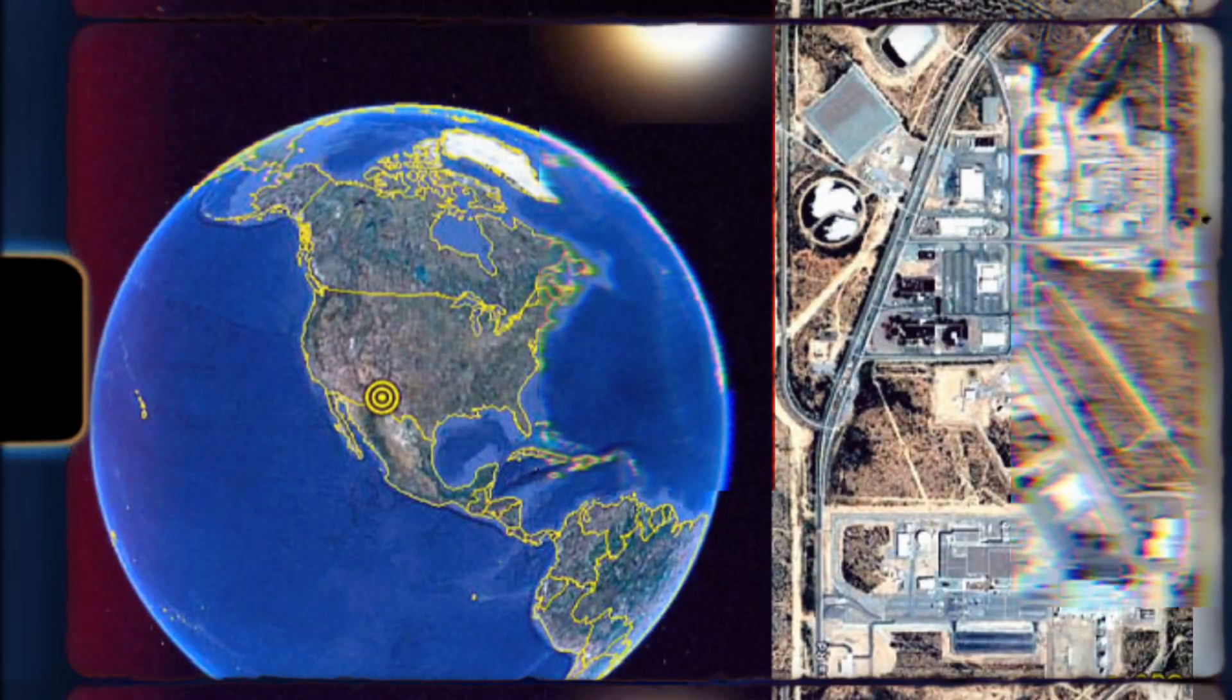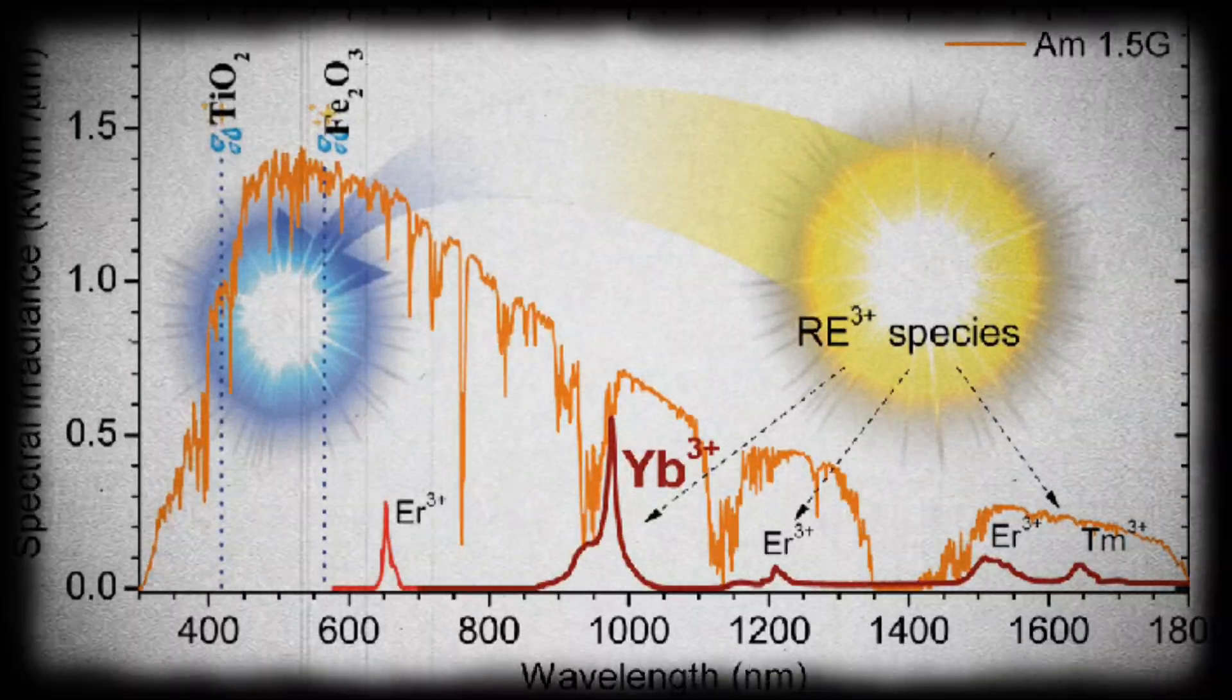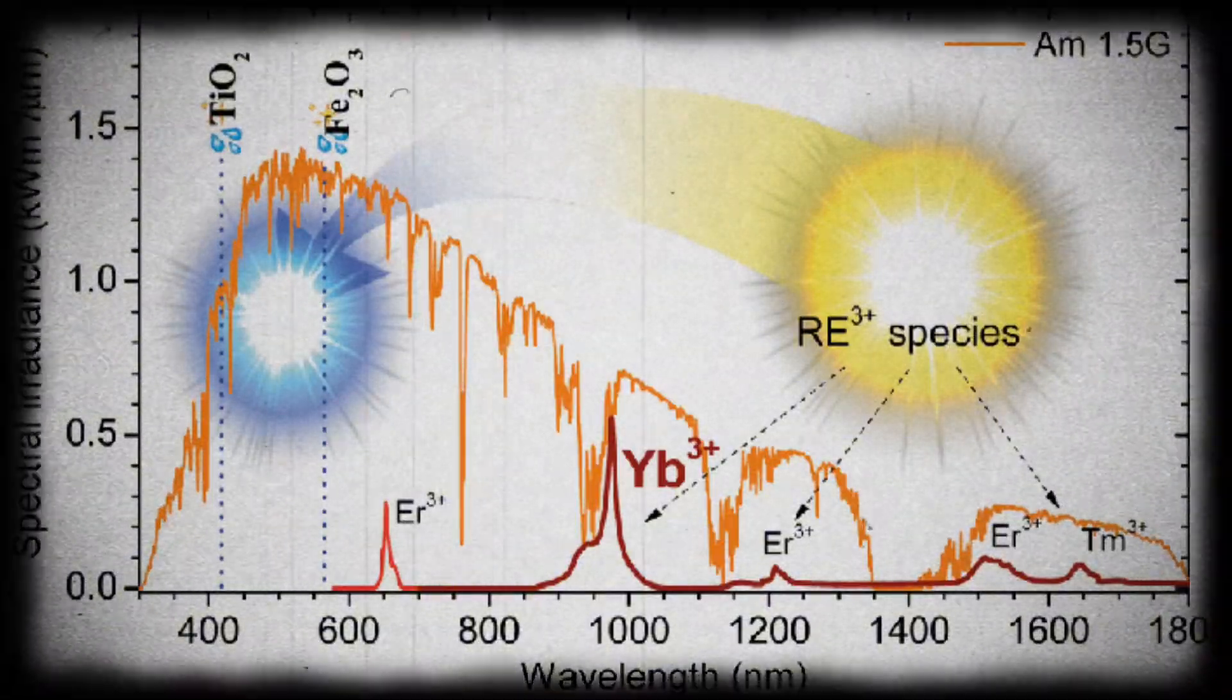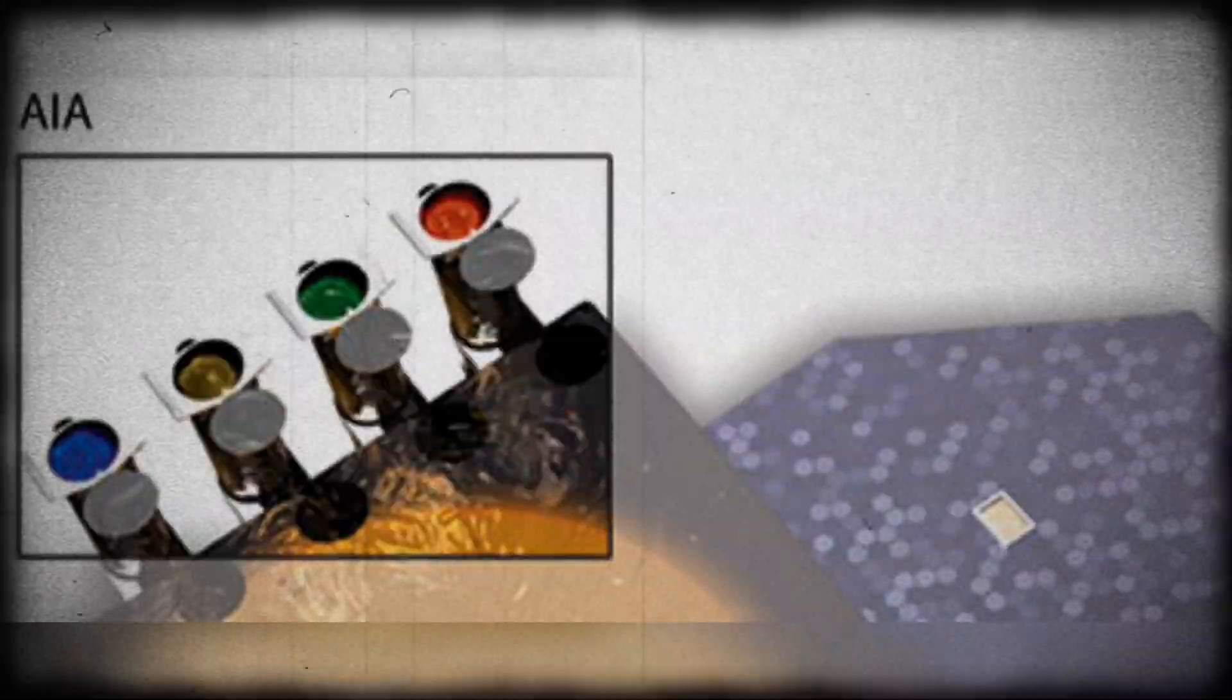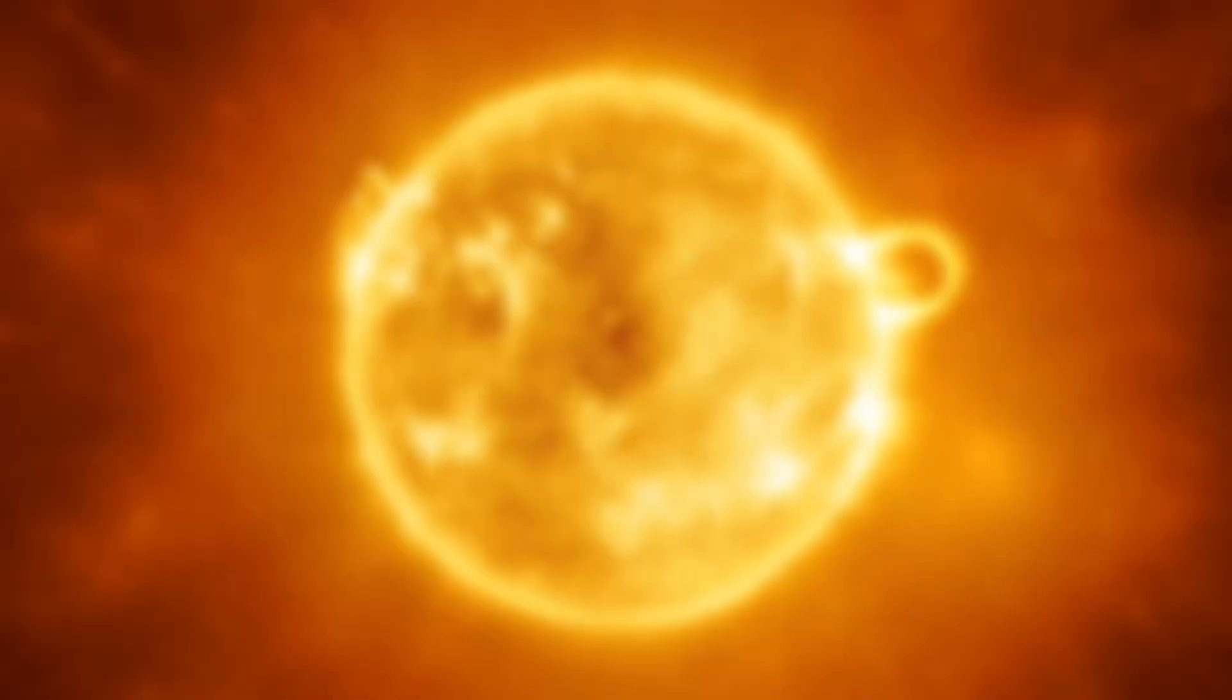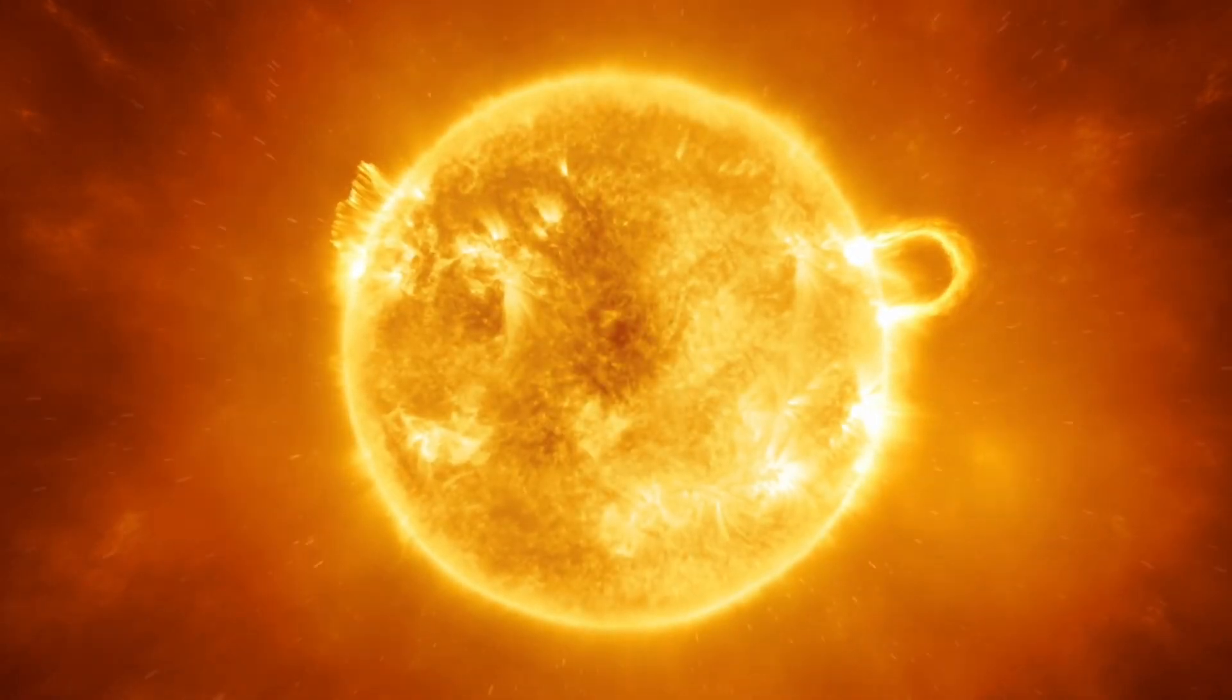The capabilities of the AIA are genuinely groundbreaking. It observes the sun across 10 different wavelengths, each finely tuned to a specific temperature of solar material. This enables scientists to perceive the sun's surface and atmosphere in a rich spectrum of colors, with each hue exposing unique phenomena.